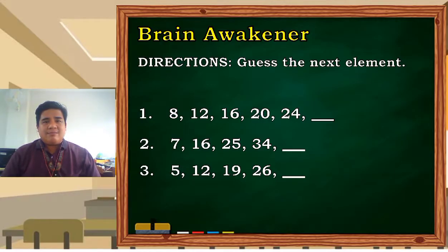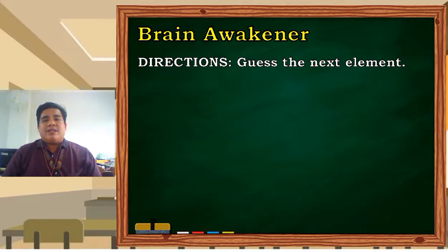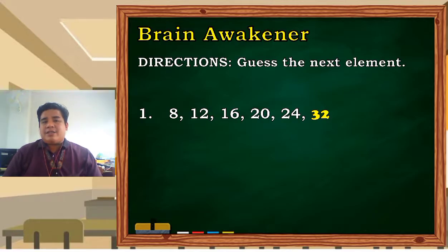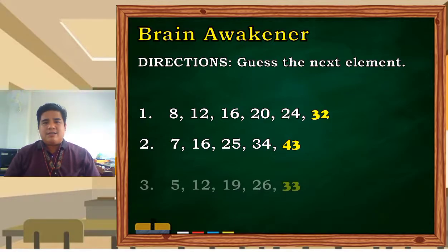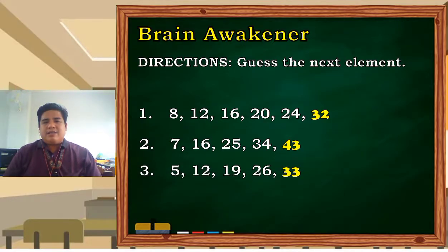Let's try if you get it right. For number one, the next element is 32. For the second one, the next element is 43. And for the last one, the next element is 33. So if you get it right, thumbs up!